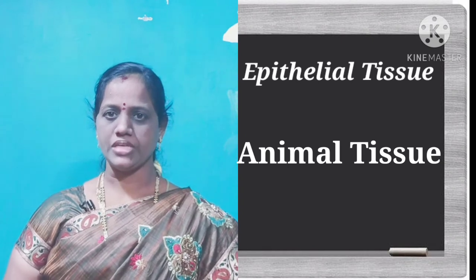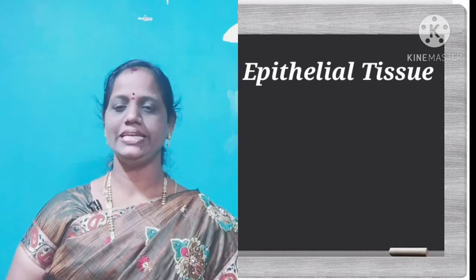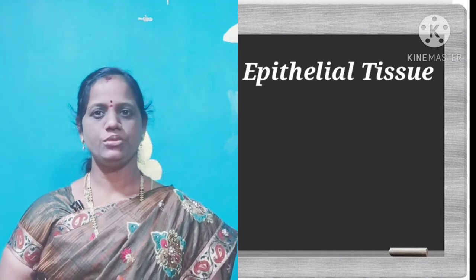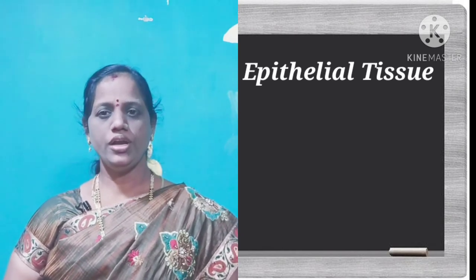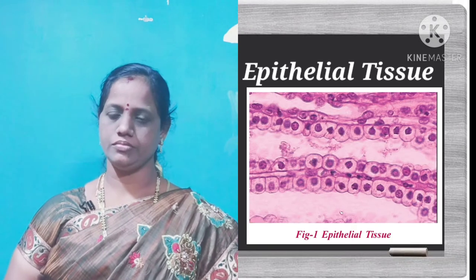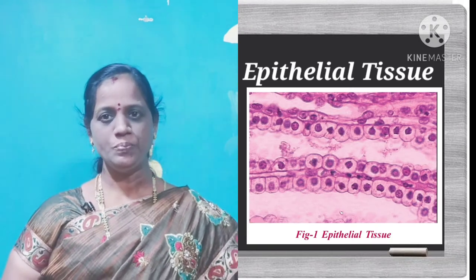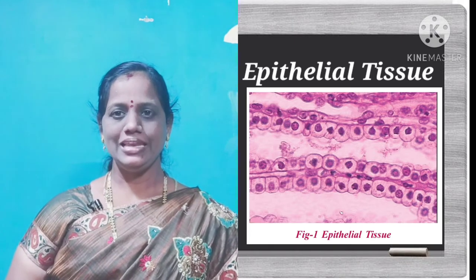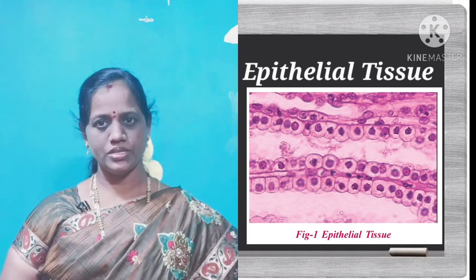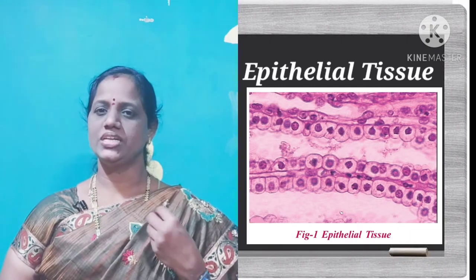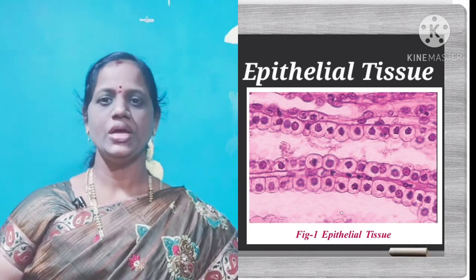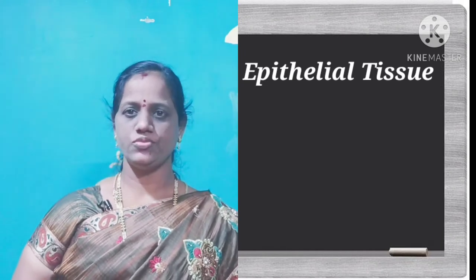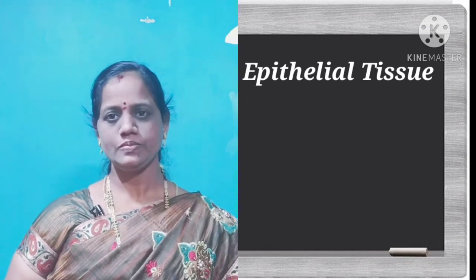Tissues are of so many types. Animal tissues are of so many types: epithelial tissue, connective tissue, muscle tissue and nervous tissue. We have already discussed muscle tissue in an earlier video. But in this video, we are going to learn about the epithelial tissue — how many types of epithelial tissue there are, what are the functions of epithelial tissue and how it is useful for us.